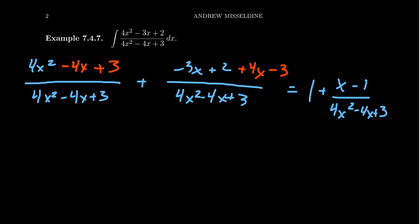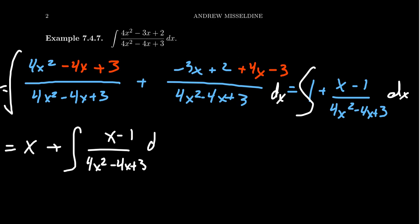And so using this right here, we're going to integrate this thing. The anti-derivative of 1 is just going to be x. So that's useful here. But then the second part, how do you deal with that? The integral of x minus 1 over 4x squared minus 4x plus 3 dx.